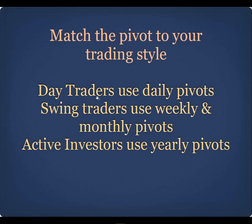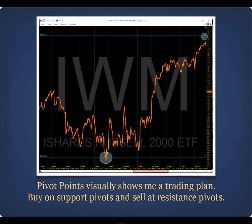Match the pivot to your trading style. Day traders should use daily pivots; swing traders should use weekly and monthly pivots; active investors should use yearly pivots. Here's a chart of the IWM from last month. The blue line is the monthly pivot at the bottom and the monthly first resistance at the top. You can see price came down right to the monthly pivot, bounced off, consolidated for a few days, and by end of month had rallied up to the monthly R1 pivot — showing exactly where to buy and sell.